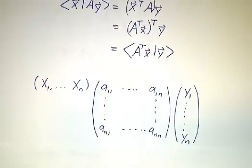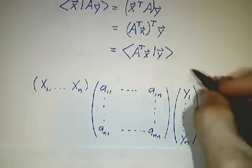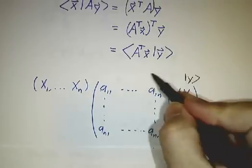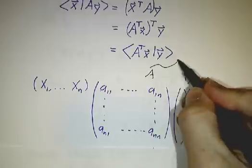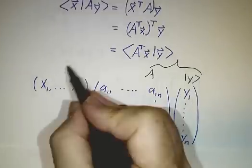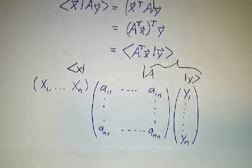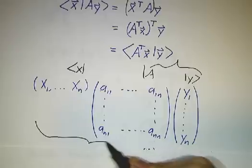And one way to look at that is, here is y and if you put this together you get—this is Ay and then you take the inner product of x with Ay. That's all well and good. But you could just as well do this multiplication first.